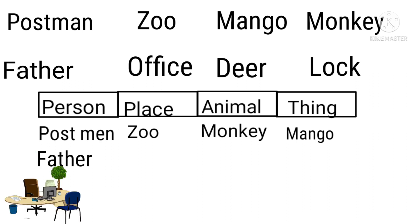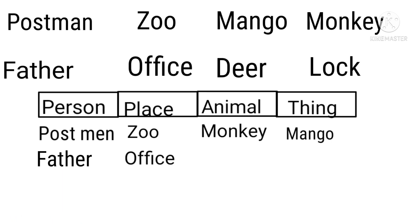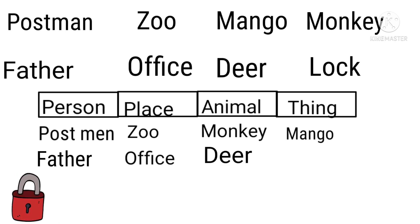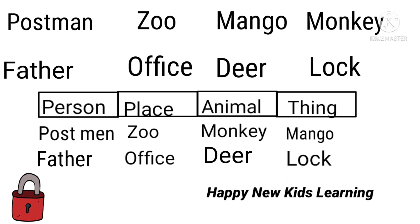Next word is office — the name of a place, so we will place it under place. Next word is deer — the name of an animal, so it will be placed under animal. The last word is lock — the name of a thing, so we will write it under thing.